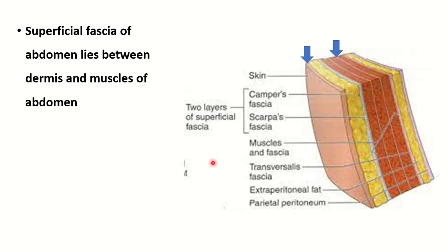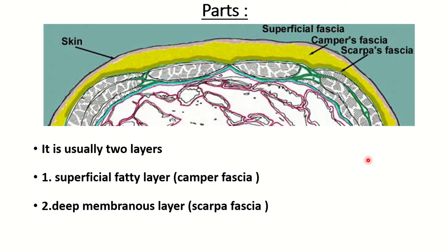The location of the superficial fascia is in between the dermis and the muscle of the abdomen. It has two layers: the superficial fatty layer, Camper fascia, and the deep membranous layer, also known as Scarpa fascia.